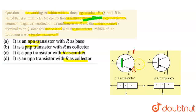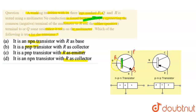P हमारा emitter हो सकता है और Q हमारा collector हो सकता है। जब तक हमारे base में कोई current flow न हो, collector और emitter के बीच कोई connectivity नहीं होती। इससे confirm होता है कि R हमारा base है।